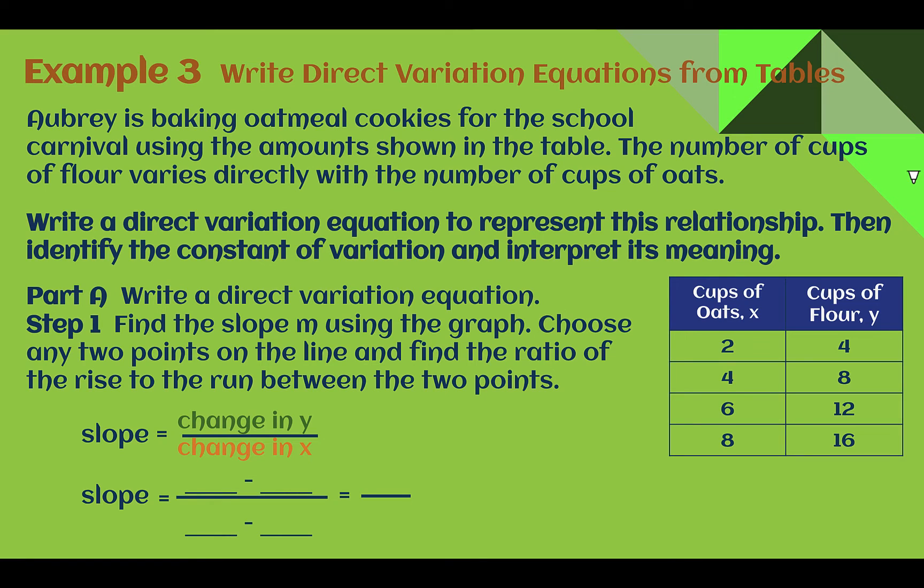Example 3. Write direct variation equations from tables. Aubrey is baking oatmeal cookies for the school carnival using the amounts shown in the table. The number of cups of flour varies directly with the number of cups of oats. Write a direct variation equation to represent this relationship, then identify the constant of variation and interpret its meaning. So first, let's write our equation.